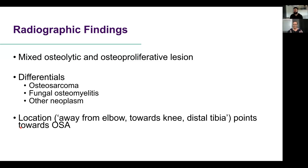Putting all of these pieces together, we have a mixed osteolytic — bone lysis — and osteoproliferative lesion — that periosteal reaction. Differential diagnoses include osteosarcoma as number one, fungal osteomyelitis, and other neoplasms. Location is critically important: osteosarcoma is the most common primary bone tumor of dogs, occurring away from the elbow and towards the knee, plus the distal tibia. This is distal tibia — osteosarcoma until proven otherwise. To prove it, we put a needle into this lesion, typically under ultrasound guidance, and send it to cytology.